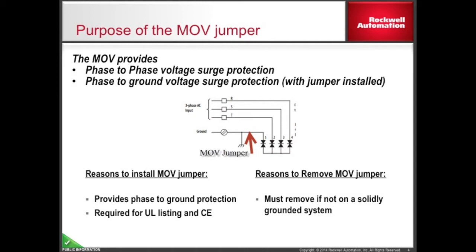On power systems where the secondary of the transformer providing power to the drive is not a Y with a solidly grounded neutral, the PE-A jumper should be removed.